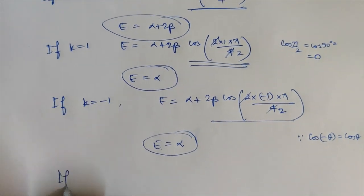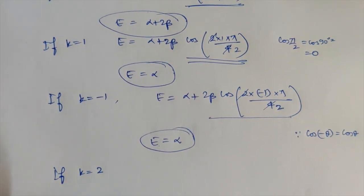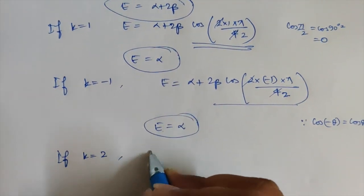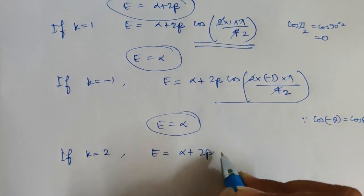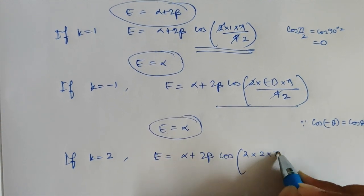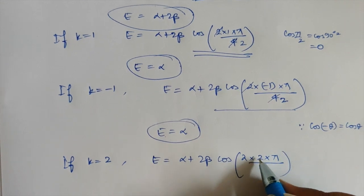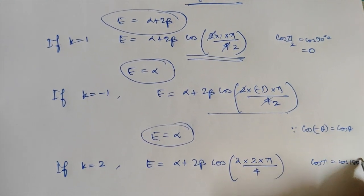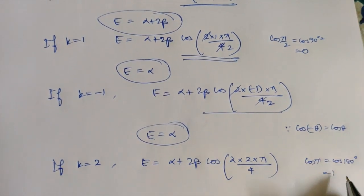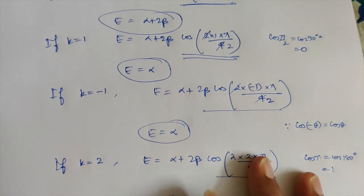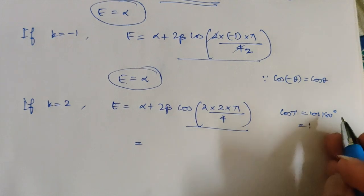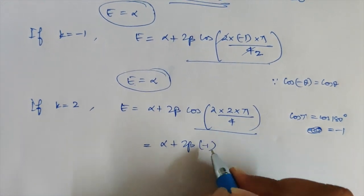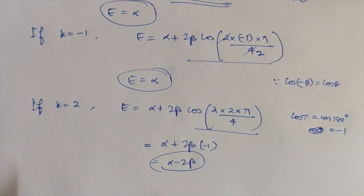For K = 2: E = α + 2β cos(2×2×π/4) = α + 2β cos(π). Cos(180°) = −1, so E = α + 2β × (−1) = α − 2β. So for cyclobutadiene you now have four energy values: α + 2β, α, α, and α − 2β.